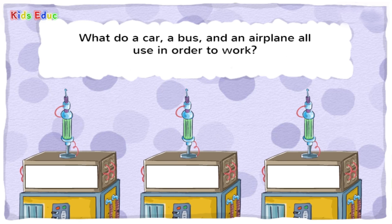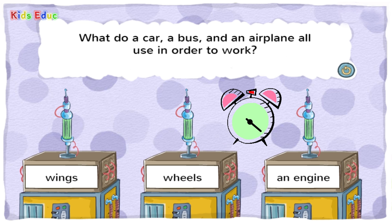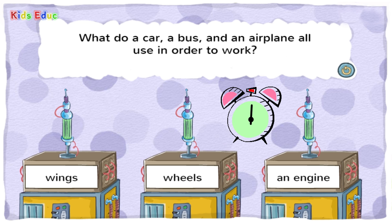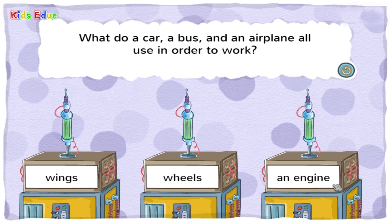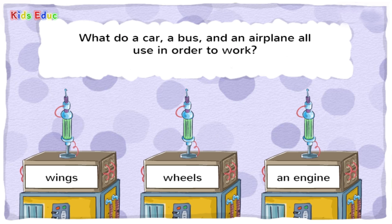What do a car, a bus, and an airplane all use in order to work? Wings. Wheels. Tools. An engine. — An engine. You got it! An engine is a machine that uses energy to work.